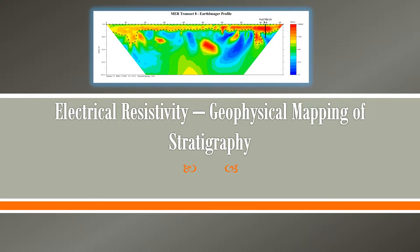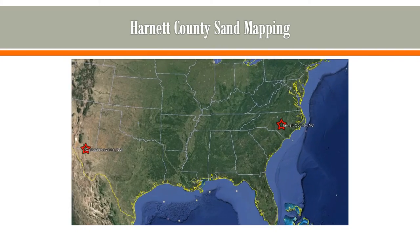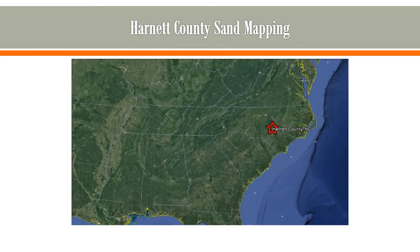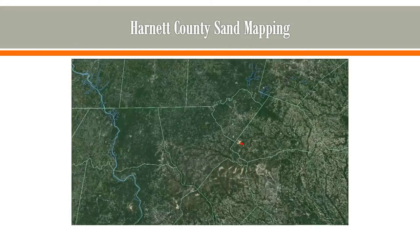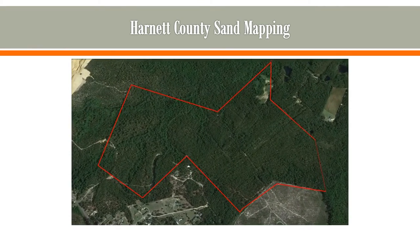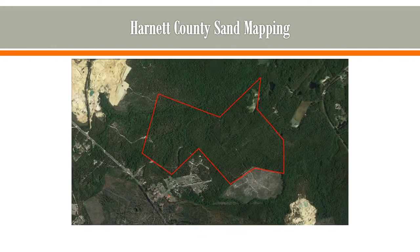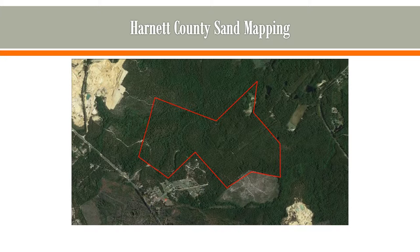This is a case study where we used electrical resistivity, which is a type of surface geophysics, to map a shallow sand unit across an undeveloped piece of land. The project was located in Harnett County, North Carolina, and the client had inherited approximately 230 acres of land that he was interested in using to mine sand, so we proposed to map the site where we could with electrical resistivity.